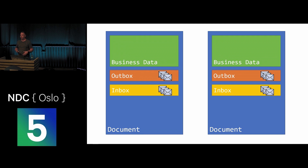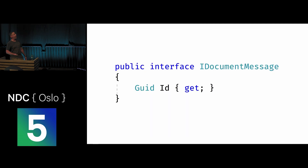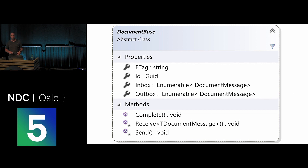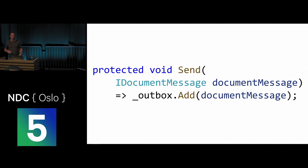Our messages started with an IDocumentMessage interface containing just an ID property, so we can distinguish one message from another. We then created a base document class including the inbox, outbox, and base properties like ID and ETag for concurrency. This document base class was the foundation for all CosmosDB documents. It also included methods to send messages — which just adds the message to the outbox — to receive messages, and to complete messages. Sending doesn't actually dispatch the message; it records it so something else can dispatch it later.